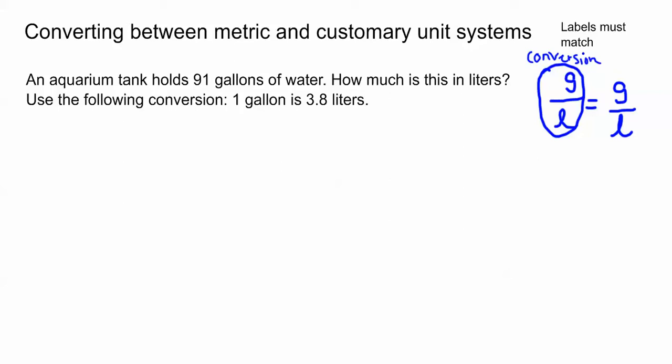So we're taking the unit conversion they give us, gallons over liters, and we're going to set that equal to our new calculated information gallons to liters. When you set up your proportions you need to make sure that your labels match. What I mean by that is that you've got Gs both in the numerator and Ls both in the denominator. Actually liters are usually represented with a capital L so we'll change that here to a capital L.